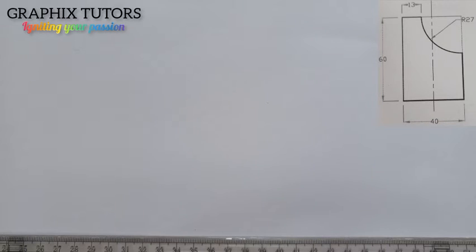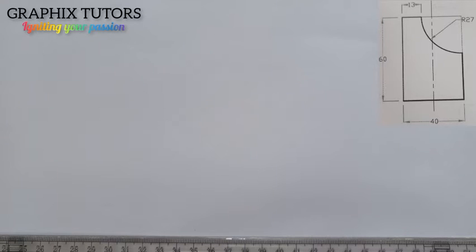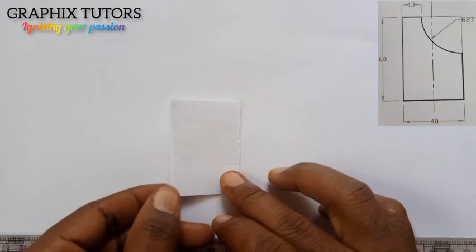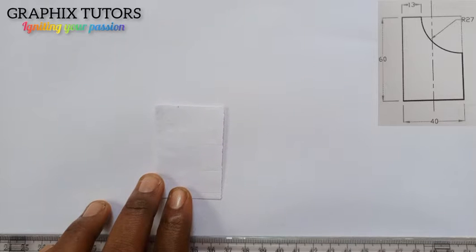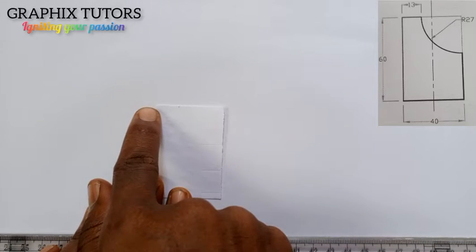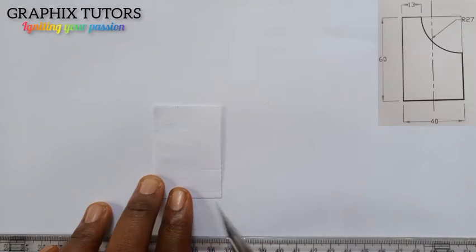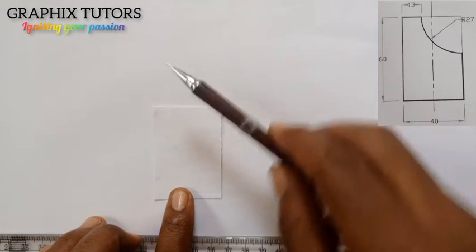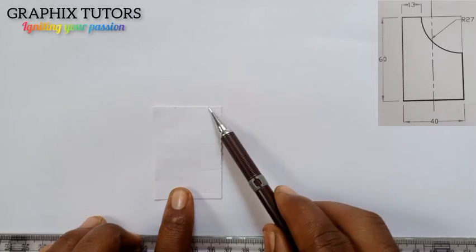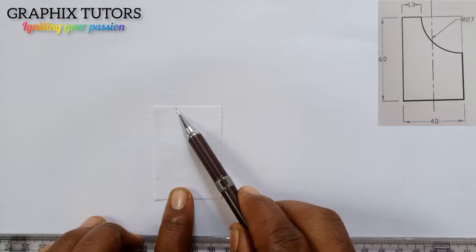Good everyone, my name is Graphics. Today we want to draw the development of that figure displayed at the top right corner of the screen. Before we start drawing, I want to show you what it means to develop a figure with the pattern. Let me assume this is my figure here. From the beginning of the figure to the inner trigger is 13, the height is 60, the width is 40, and the distance from here to here is 13.